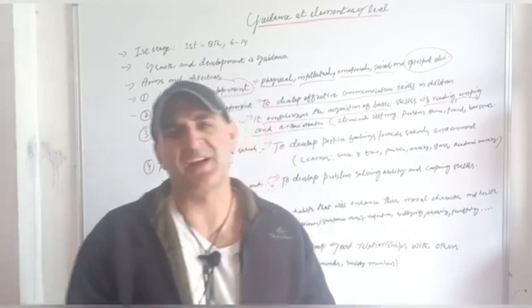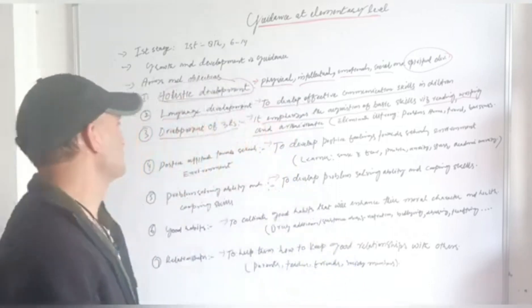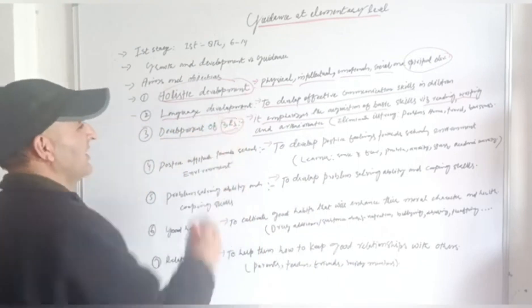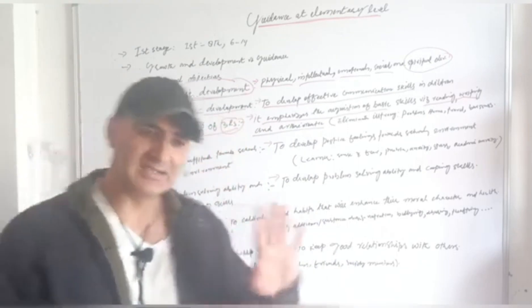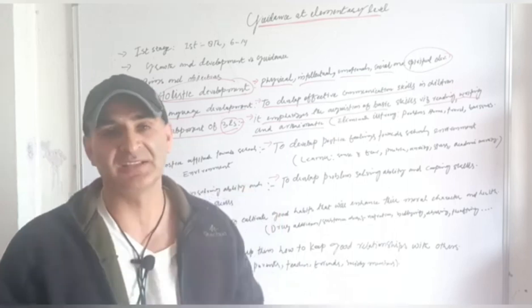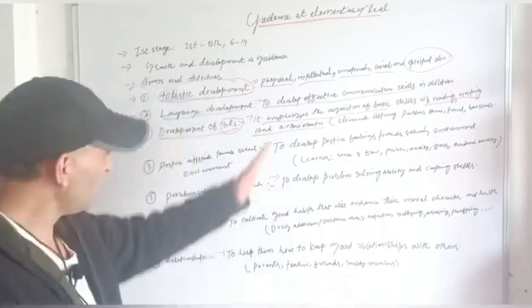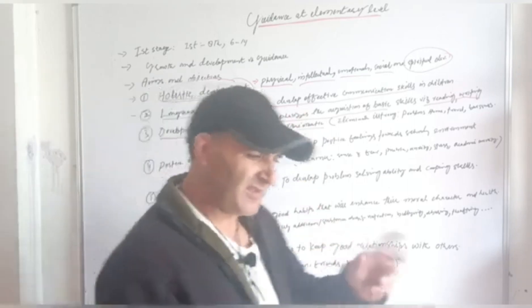So the main purpose of guidance at elementary level is development of 3RS. 3RS means reading, writing and arithmetic ability to eliminate some issues and checking.